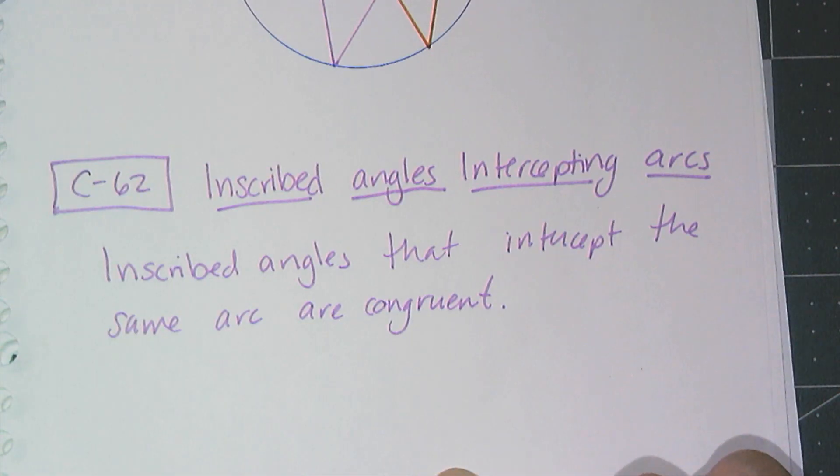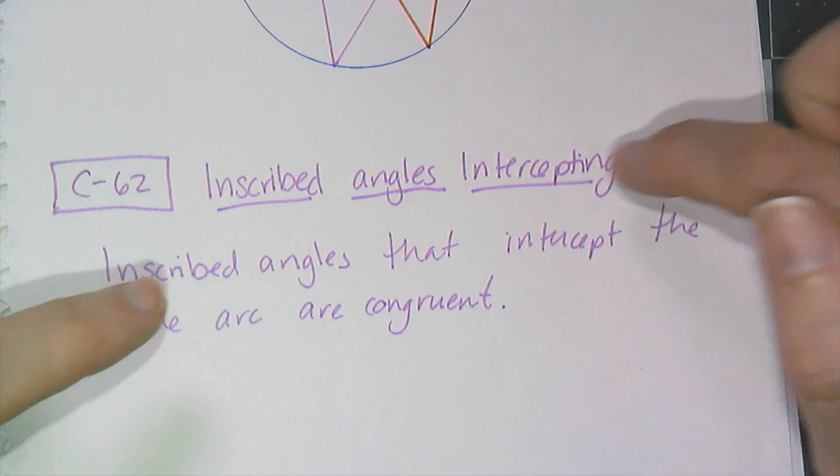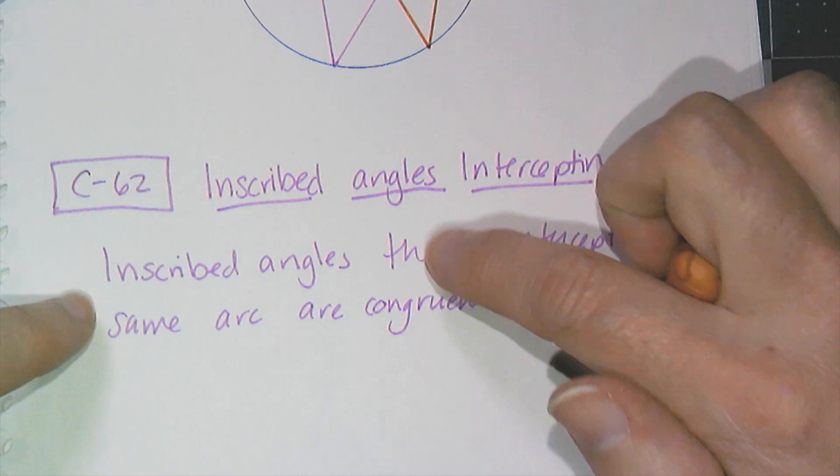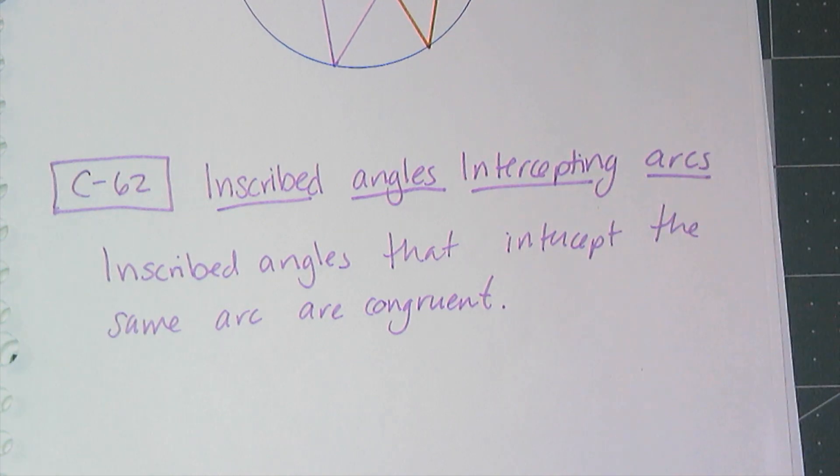Now specifically, the conjecture is going to be C62, inscribed angles intercepting arcs conjecture, and it says inscribed angles that intercept the same arc are congruent.